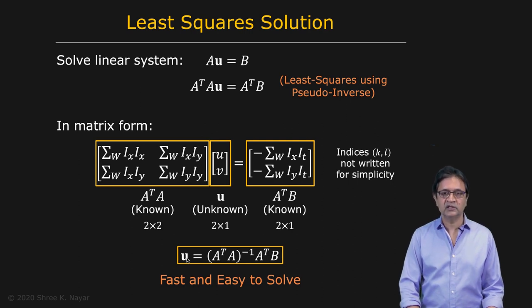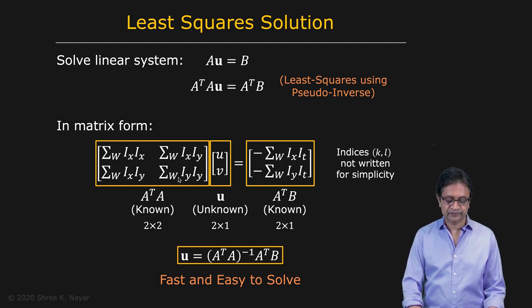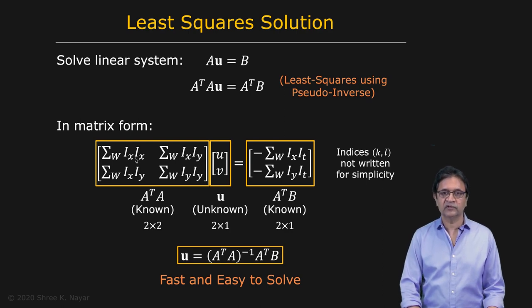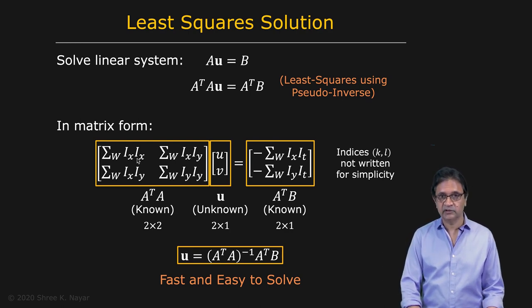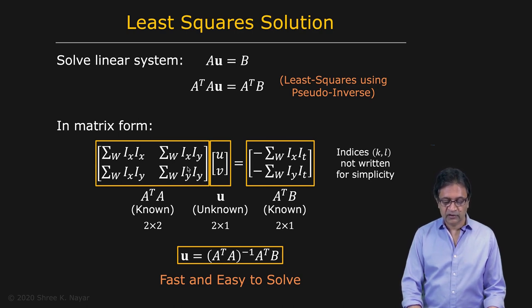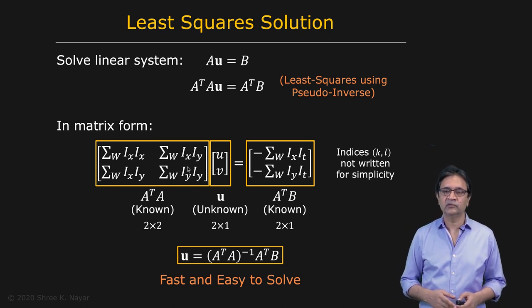This is very easy, very fast, particularly because A transpose A is a two by two matrix. And here are the elements within A transpose A. These are all functions of the spatial derivatives. That's interesting, Ix and Iy. You don't have the time derivative in this matrix right here. The time derivative shows up in B, the vector on the right hand side.